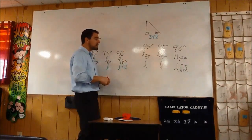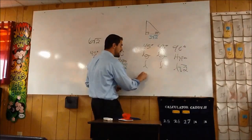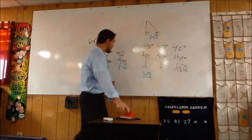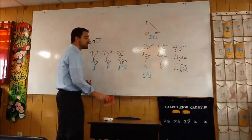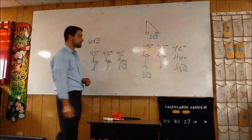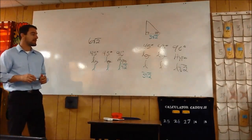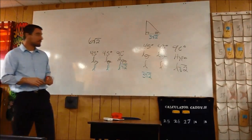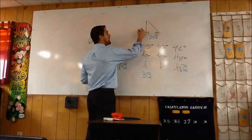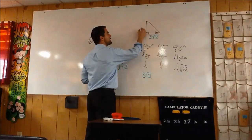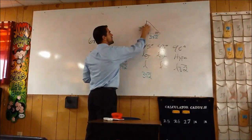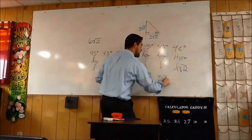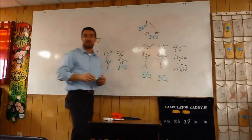We now have that the length of one of the legs is 3 square root 2. So what is the length of the other leg? It's also 3 square root 2, because the legs are always congruent in a 45-45-90 triangle.